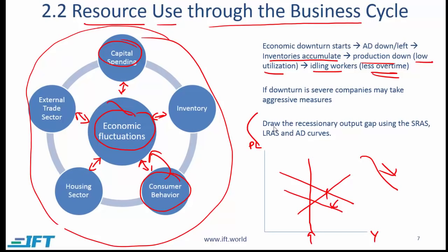To draw the recessionary output gap: we have the long-run aggregate supply, aggregate demand shifting down, and if consumer confidence also falls, aggregate demand shifts further left. Real GDP falls to a point to the left of potential GDP, and we end up with a recessionary output gap — that gap is the distance between real GDP at this stage and potential GDP.